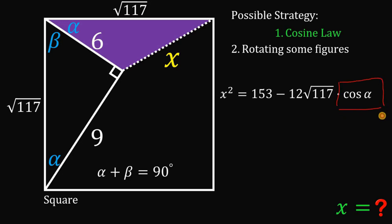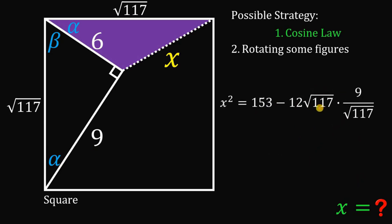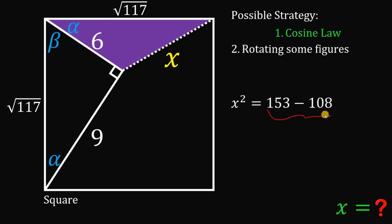Now, what is the value of cosine alpha? To solve for it, we use the right triangle: cosine alpha equals the adjacent side, which is 9, over the hypotenuse, which is the square root of 117. So cosine alpha equals 9 over the square root of 117. Substituting into the cosine law: x squared equals 153 minus 12 times square root of 117 times 9 over square root of 117. We can cancel out the square root of 117, giving x squared equals 153 minus 12 times 9. And 12 times 9 is 108. So 153 minus 108 equals 45.